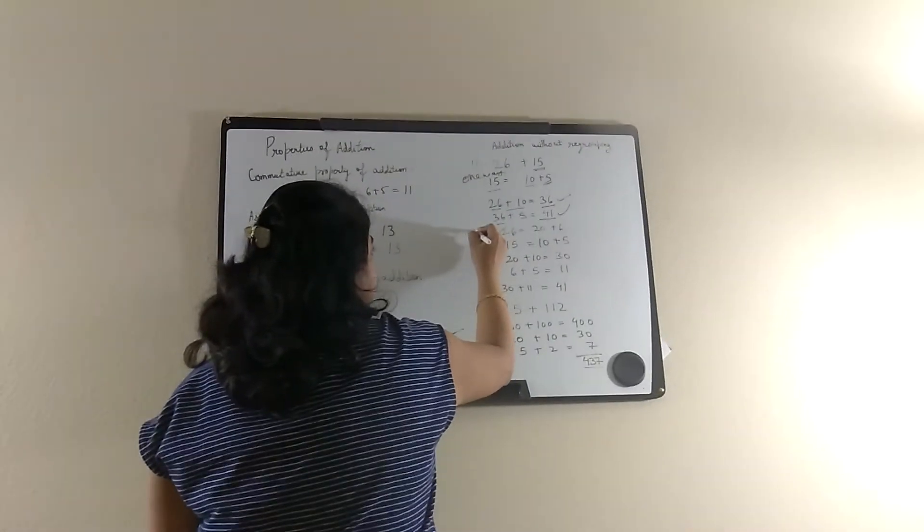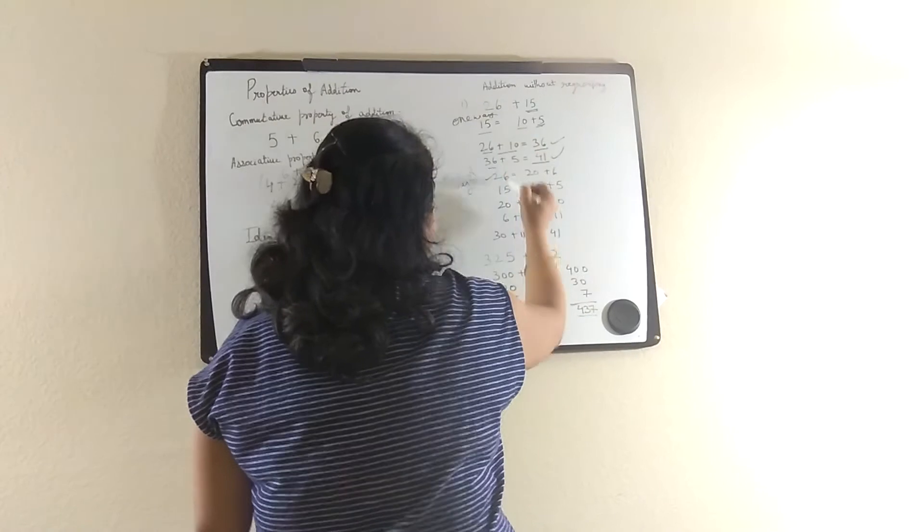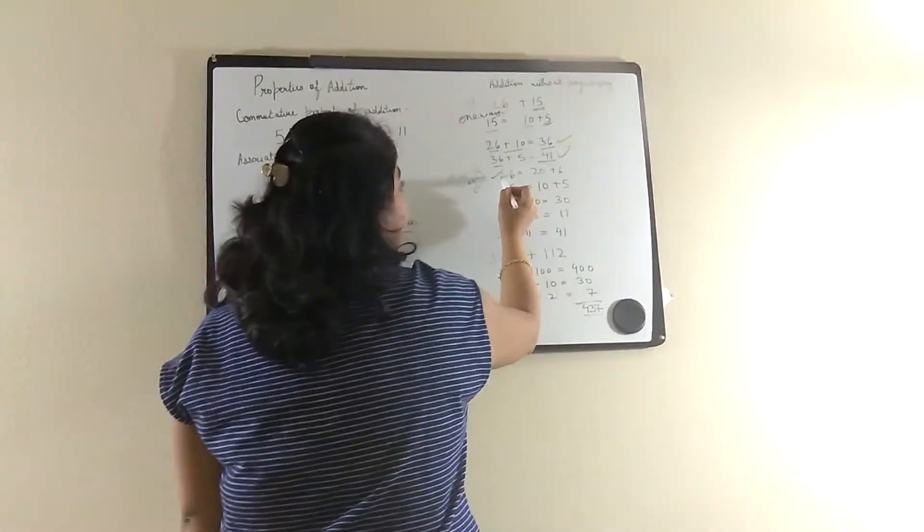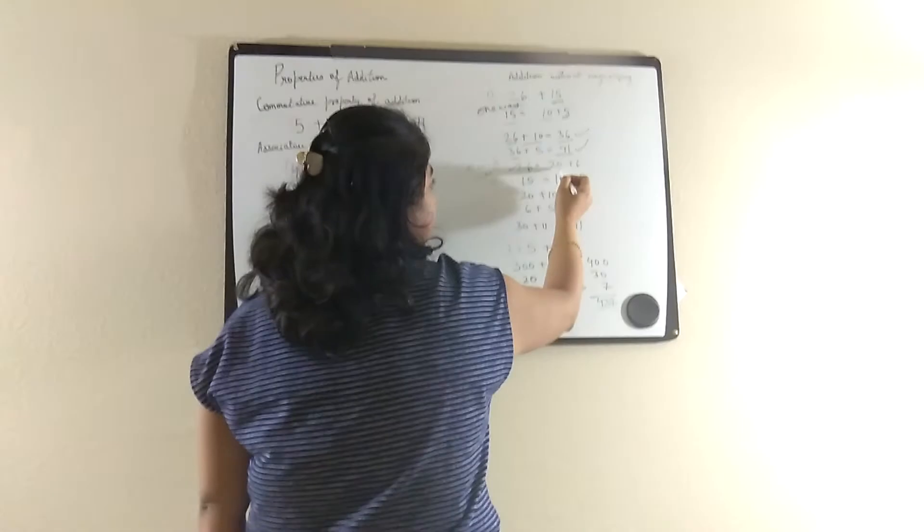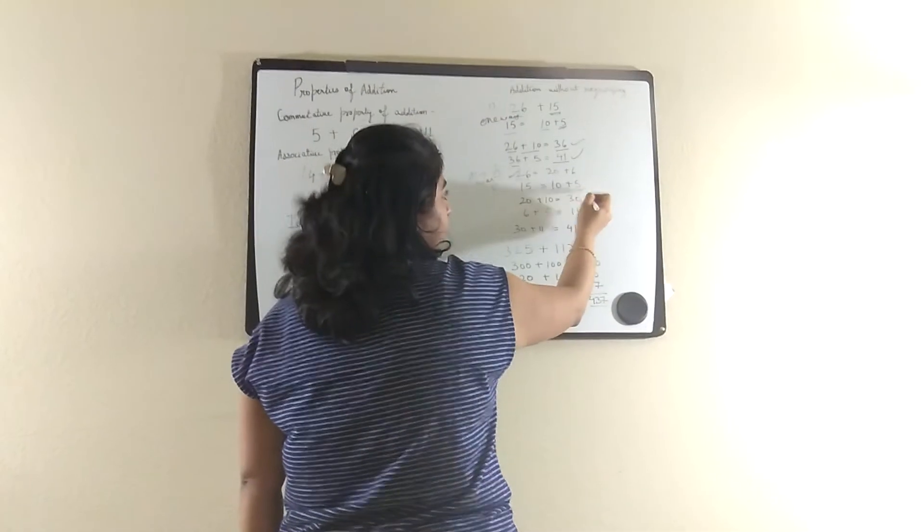The second way is you break both the numbers into tens and ones. 26 can be written as 20 plus 6, and 15 can be written as 10 plus 5.